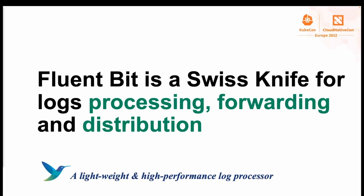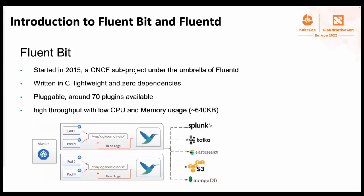Handling data collection at scale is complex. Collecting and aggregating diverse data requires a specialized tool that can deal with different sources of information, different data formats, data reliability, security, flexible routing, and multiple destinations. That is why FluentBit comes in. Looking back at the history of FluentBit, this project was started in 2015 and has been a CNCF subproject under the umbrella of the FluentD ecosystem. FluentBit was written in C, making it a lightweight, zero-dependencies project. It is also pluggable with around 70 plugins available, and has low CPU and memory usage.